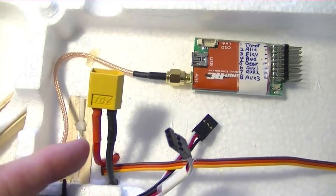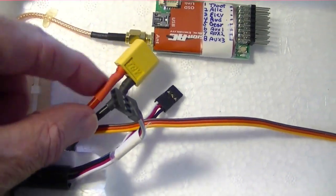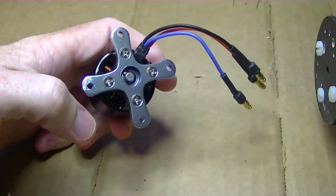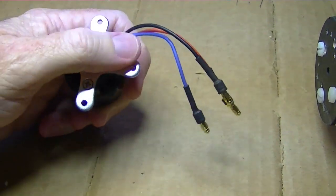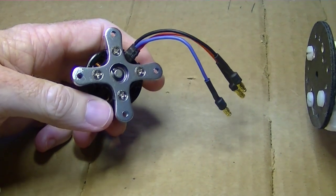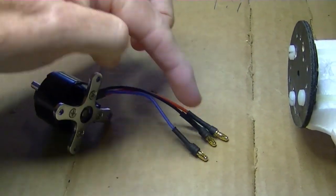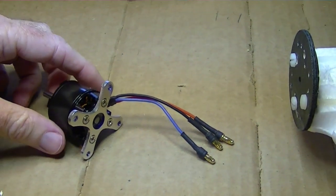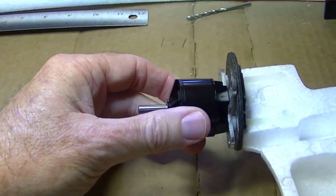All right, I've soldered the XT60 connector onto the ESC wires, so I got that done. I've mounted the back plate on the motor with these four screws using some Loctite. And I've also shortened the wires here and put the connectors back on. And now I'm going to mount the motor onto the motor mount.